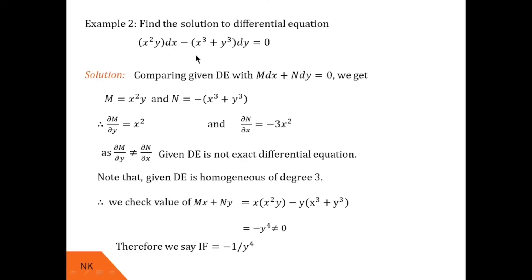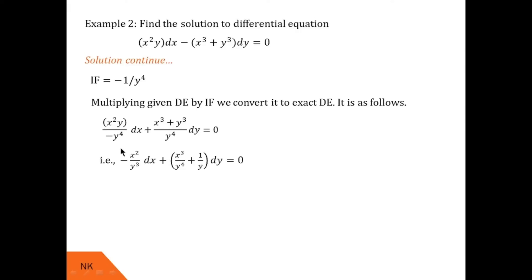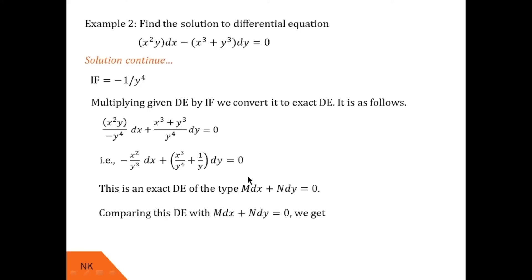Now we multiply the given differential equation by the integrating factor −1/y⁴. The y in the numerator cancels with y from the denominator, giving the first term as −x²/y³ dx. For the second term, x³/y⁴ remains, and y³ cancels with the denominator y³ leaving 1/y, so the second term is (x³/y⁴ + 1/y) dy equals 0. Since this is now an exact differential equation, comparing gives new M as −x²/y³ and new N as x³/y⁴ + 1/y.